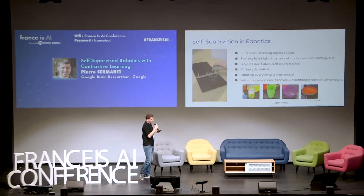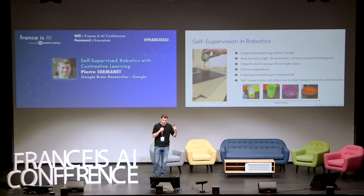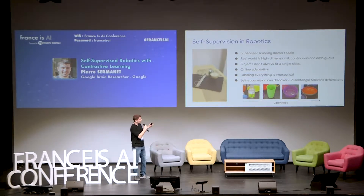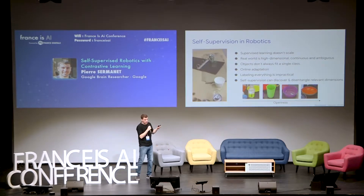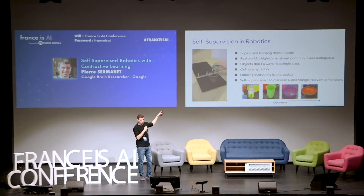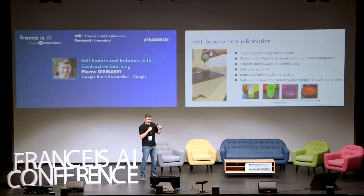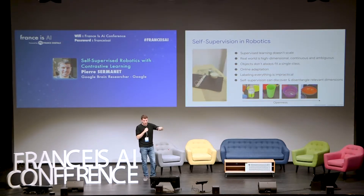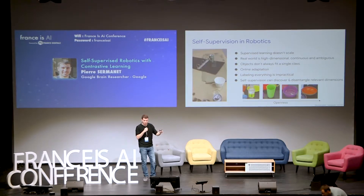So why is self-supervision important for robotics? Supervised learning works well but it doesn't scale to the real world, because the real world is very high dimensional, continuous, and also ambiguous. For example, in a pouring task, if you ask a robot to do that, it needs to know when the hand is touching the container, what position it is in, if there's liquid flowing, and how much liquid is in the recipient. That is necessary for learning the task, but also to do it yourself. These attributes are difficult to label, and you can't do it for every new situation.